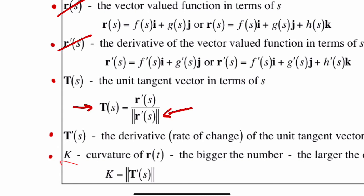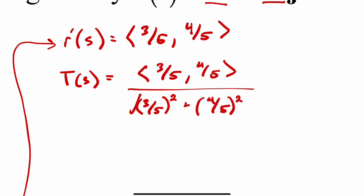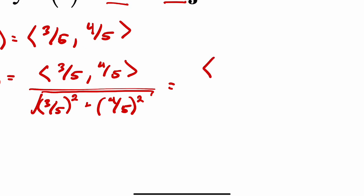We haven't done that yet, so I'll just do that in line of the equation. So T(s) would be 3/5 comma 4/5 divided by the magnitude of that. So that's the square root of 3/5 squared plus 4/5 squared.